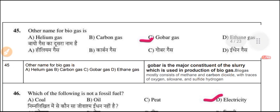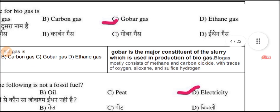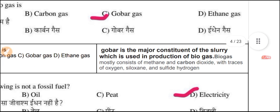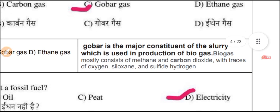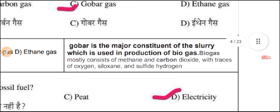Question 45: What is the other name of biogas? Biogas is a major constituent of slurry used in the production of biogas. Biogas mostly consists of methane and carbon dioxide, with traces of oxygen, siloxanes, and hydrogen sulfide.